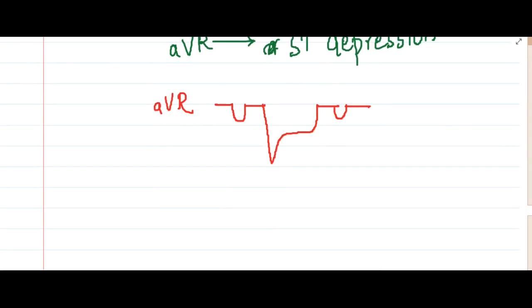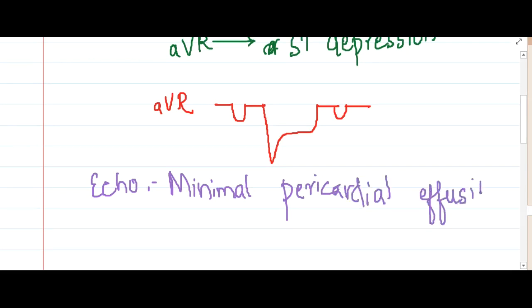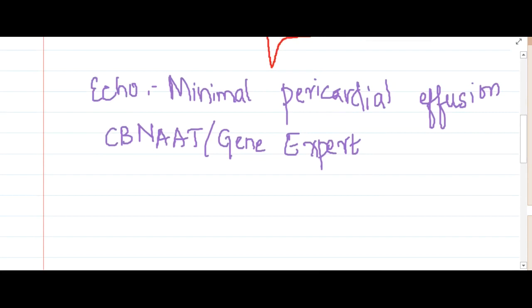Then if we see the echocardiography, in the echocardiography you will see presence of minimal pericardial effusion and you can also do CBNAAT study or GeneXpert can be done. Because here the disease is tuberculosis, we can do either CBNAAT or GeneXpert study, and after that we should give anti-tubercular therapy for 6 months.